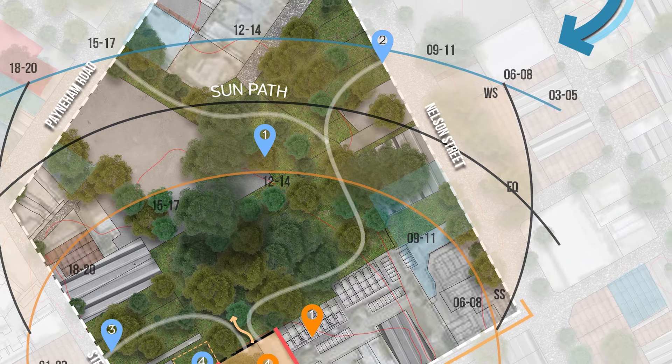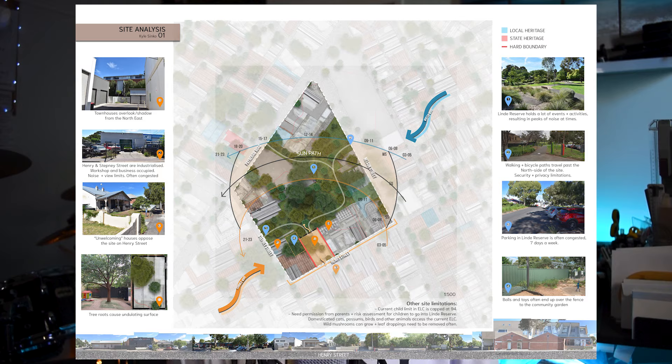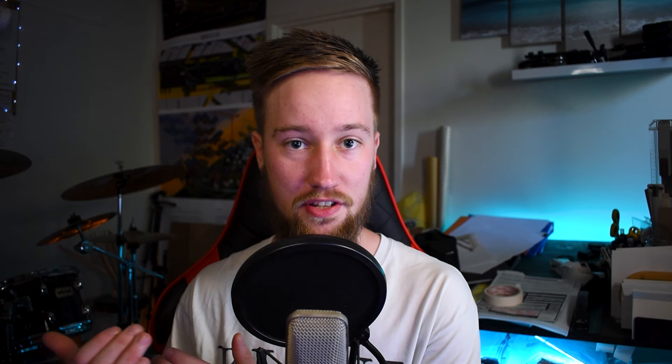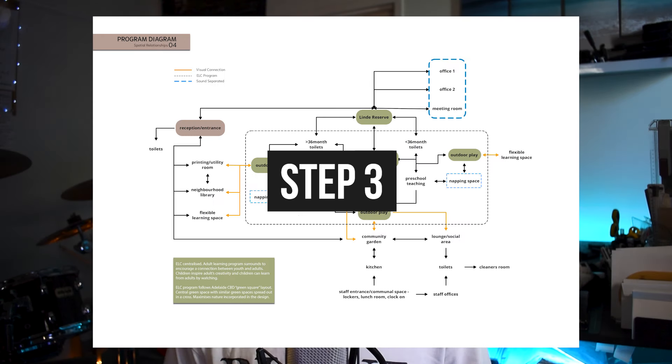I'm going to show you how to do a complete site analysis to form the foundation of your architecture projects. I've just completed the site analysis for my studio 7 project — this was part of our assessment. The way they structured it was really well done: a linear, step-by-step method for starting any architecture project that can be replicated across any project. So let's move into step one.